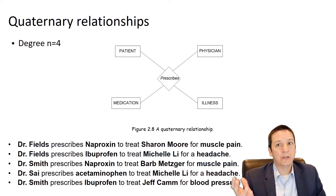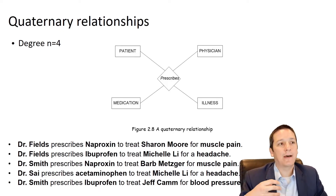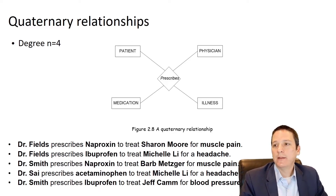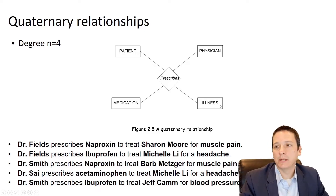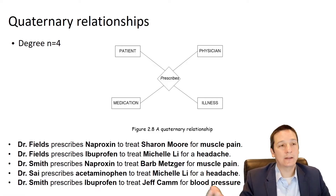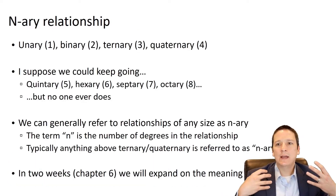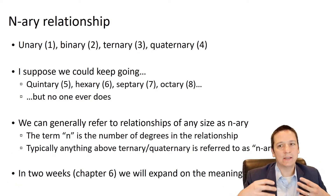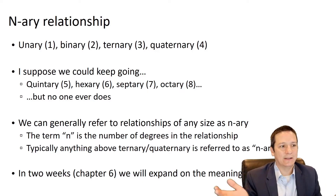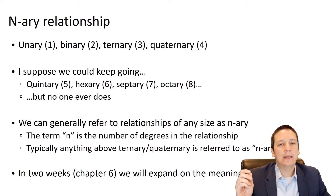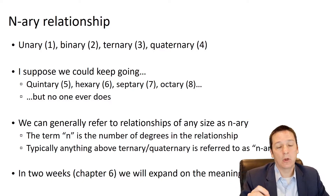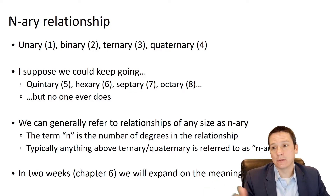Moving on, predictably, a quaternary relationship has a degree of four — four entities participating in this relationship. For example, a physician prescribes a medication to a patient for a particular ailment. We could just keep going: quintary, hexary, septary, octary — there's really no limit to how many entities could participate in a relationship, or what the degree of that relationship would be. The degree just means how many entities are in the relationship.